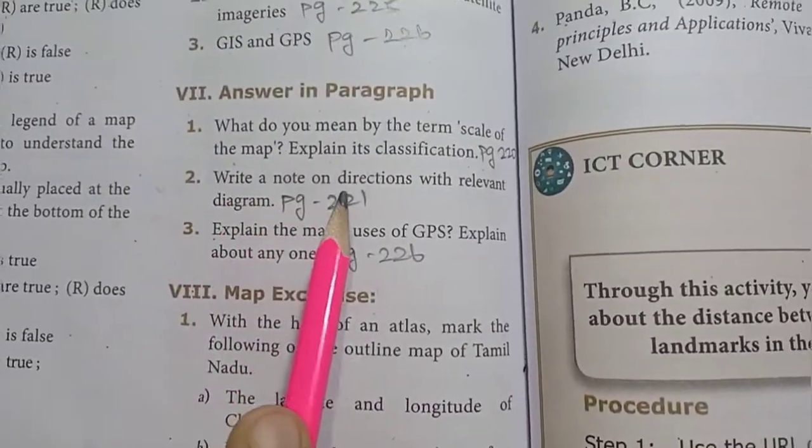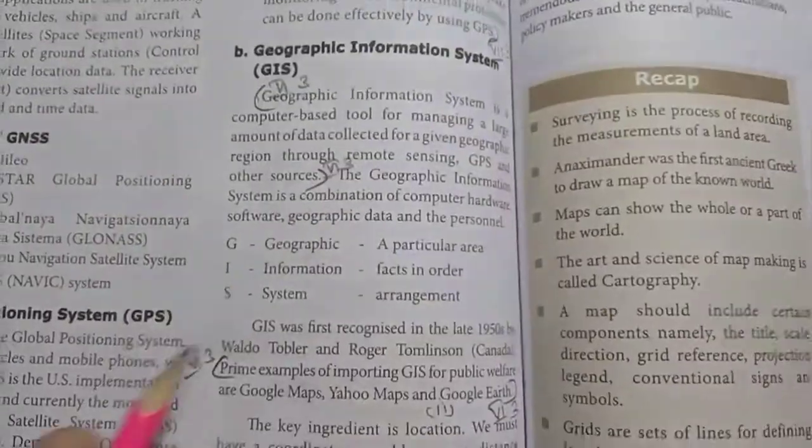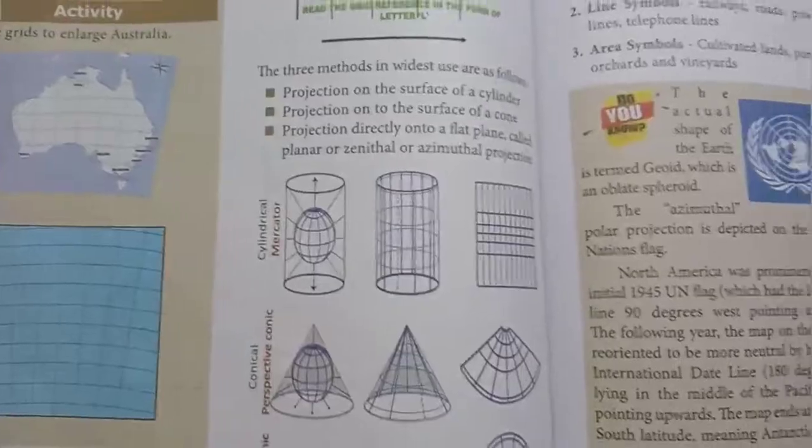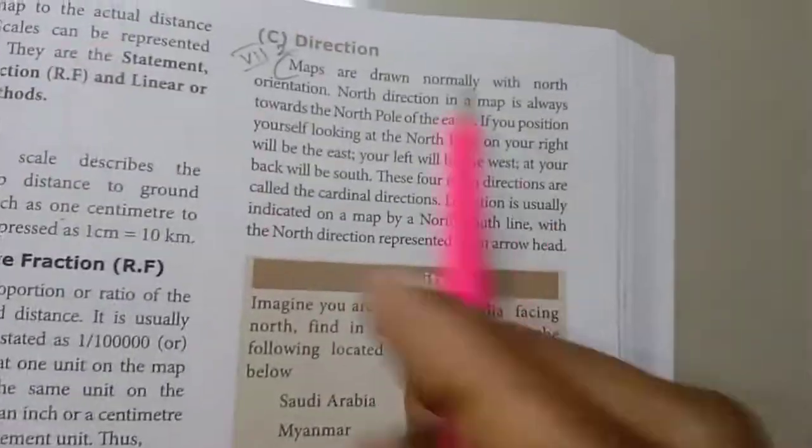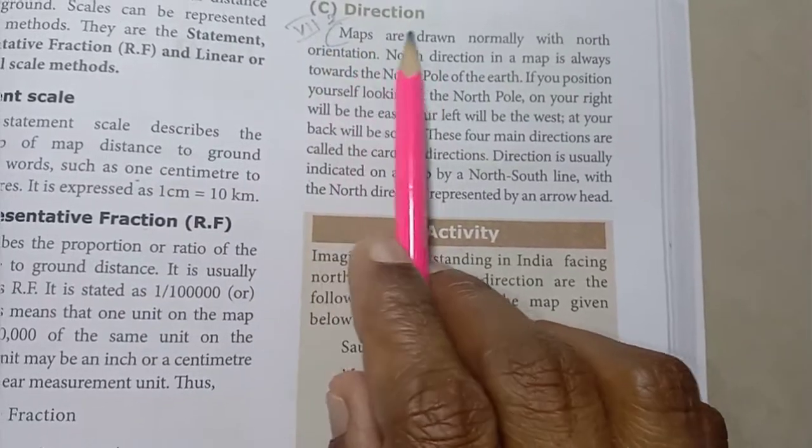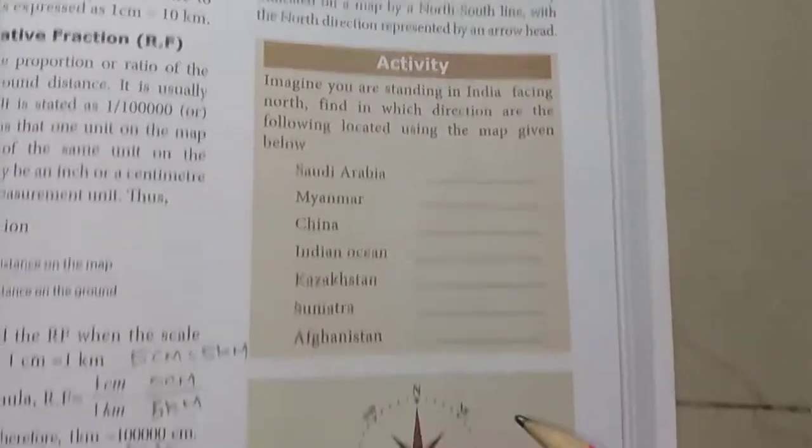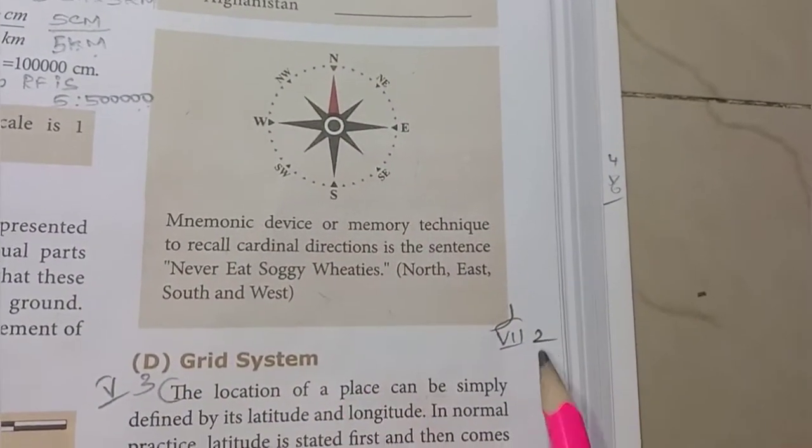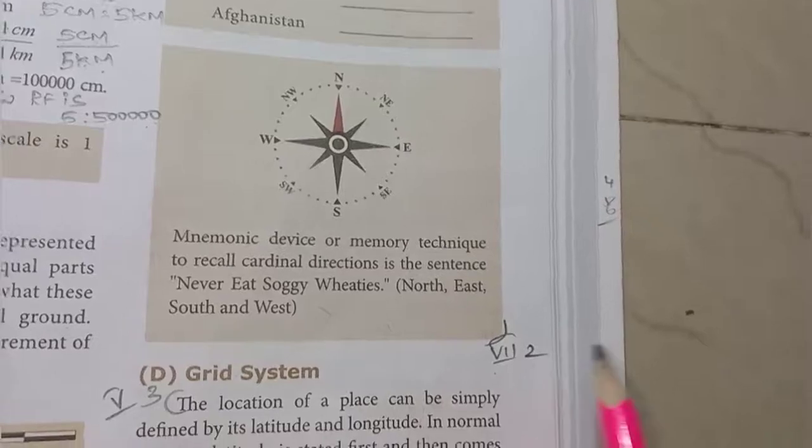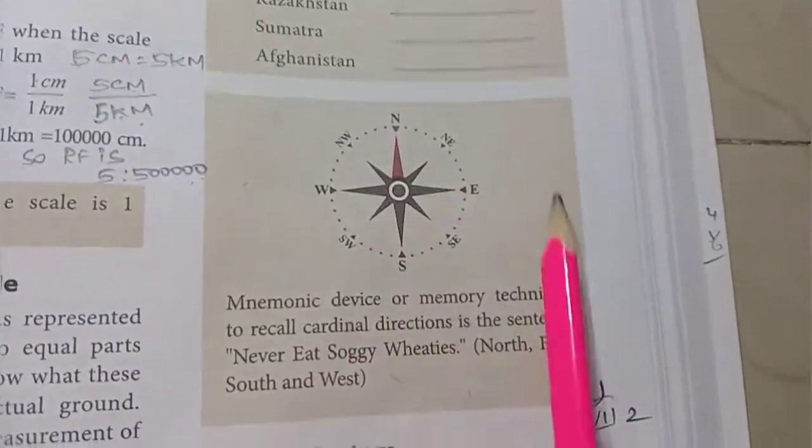Second one, write a note on directions with relevant diagram. Page 221. Maps are drawn normally. In the box, Roman numeral second one. So you learn the arrow head. Next, the drawing one. Second one answer.